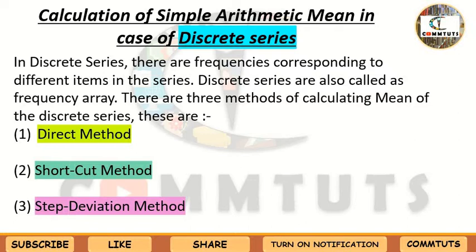In the previous tutorial we studied Simple Arithmetic Mean in case of Individual Series — we covered both the Direct Method and the Shortcut Method and practiced questions for both. Today we will cover Simple Arithmetic Mean in case of Discrete Series. In discrete series there are three methods: Direct Method, Shortcut (Assumed Mean) Method, and Step Deviation Method.